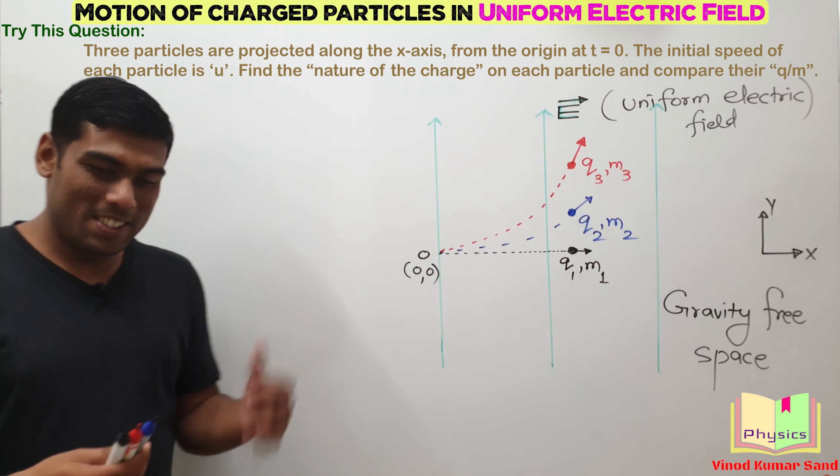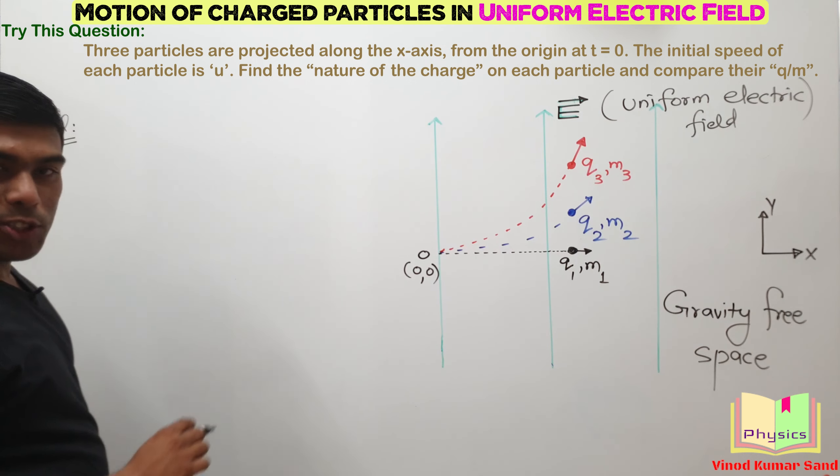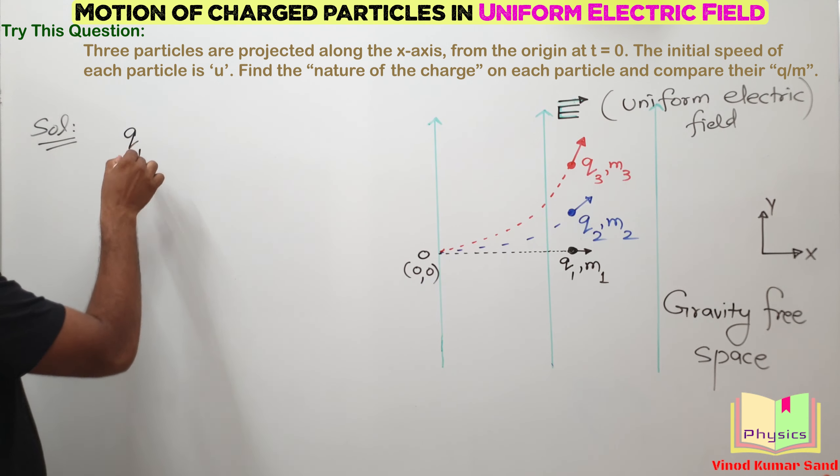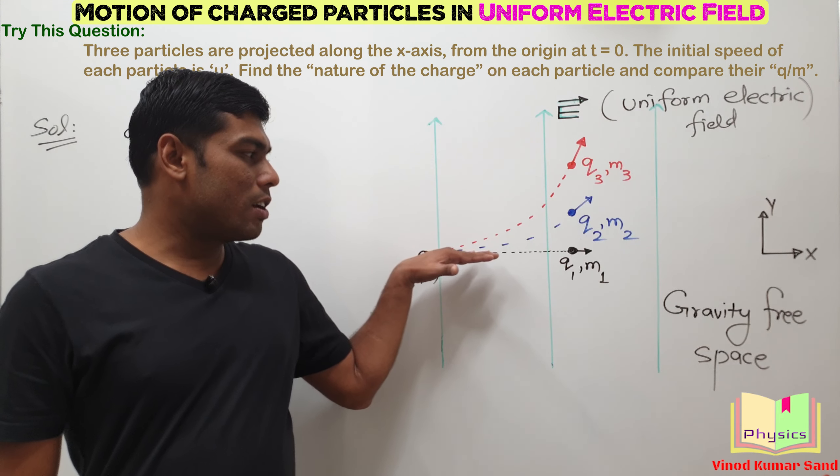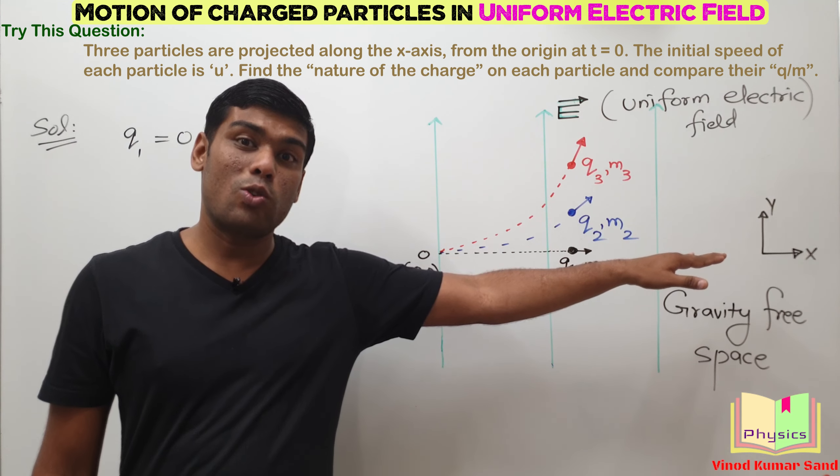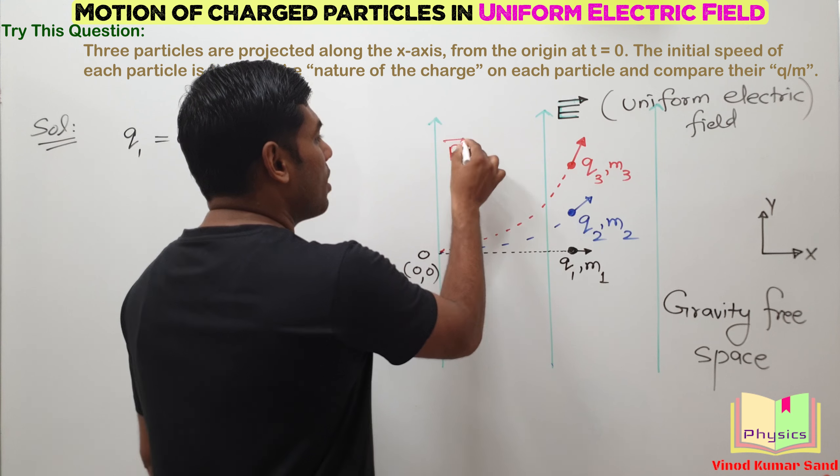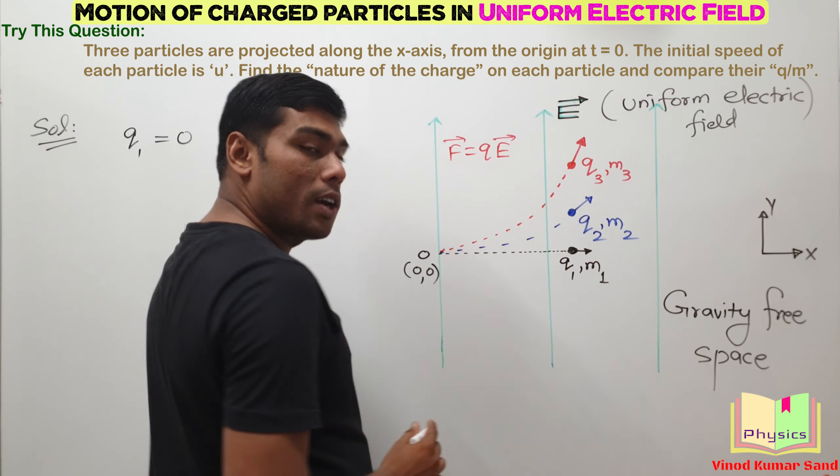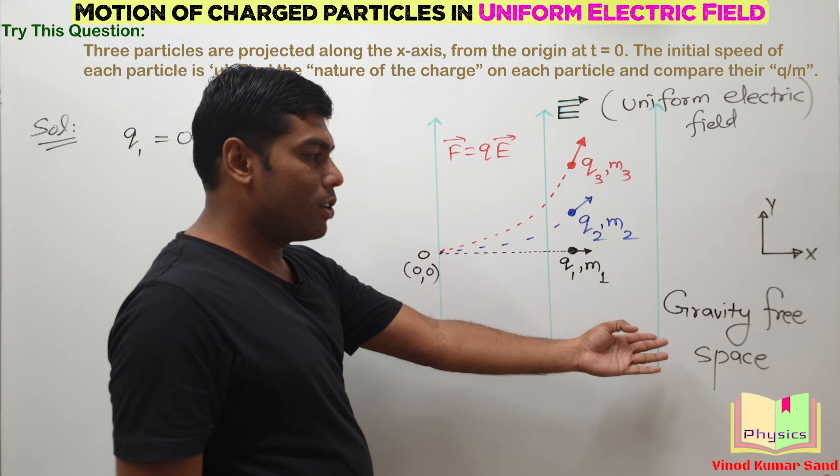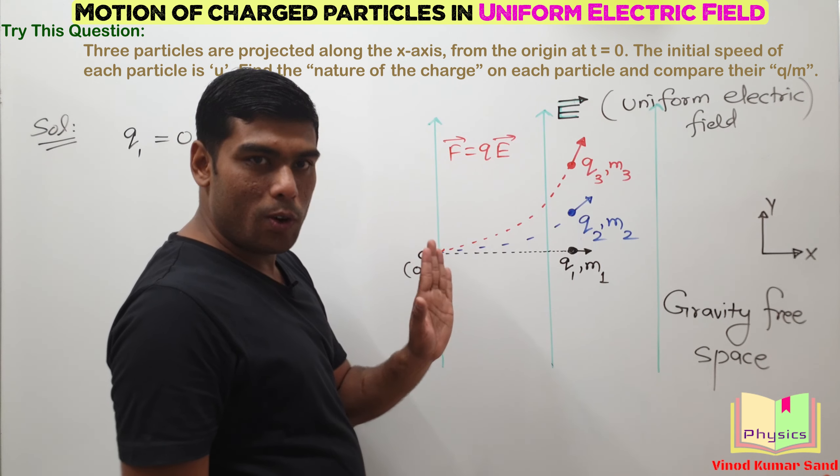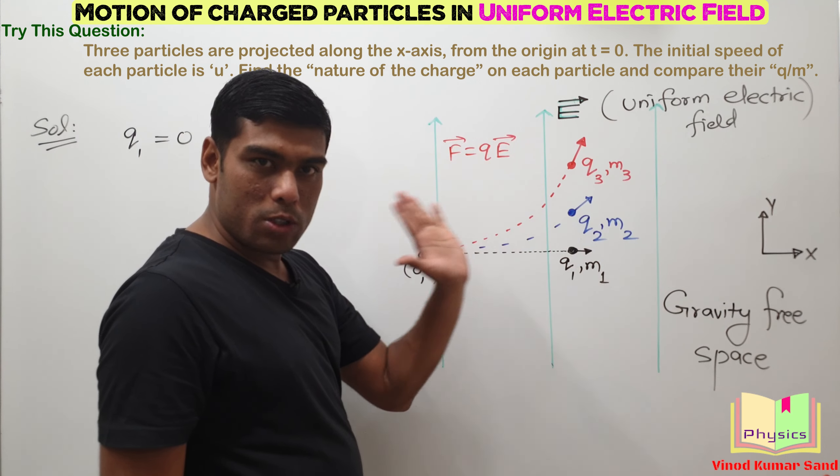I hope you are done with your calculations. So let us check the answers here. First of all, we will determine the nature of charge. On Q1, how much is the charge? Actually, it is 0. After projecting from the origin, Q1 is just going straight. There is no deflection, there is no force on Q1. Because F vector equals Q times e vector. When Q is 0, the force will become 0. Already it is gravity-free space, so no mg, there is no air resistance. That is why it is going undeflected. It is not experiencing any force.